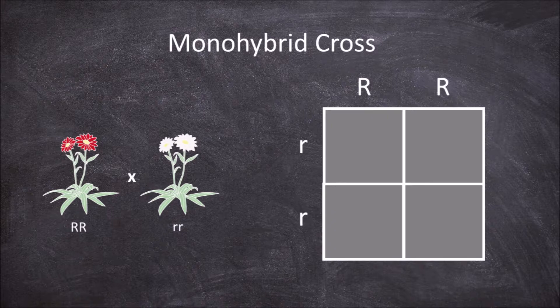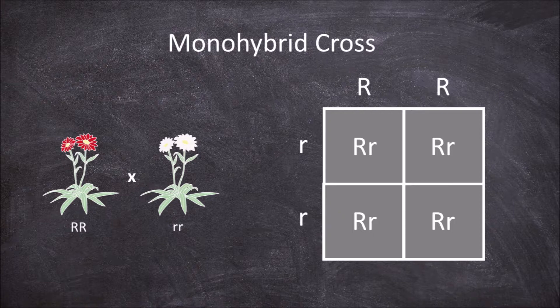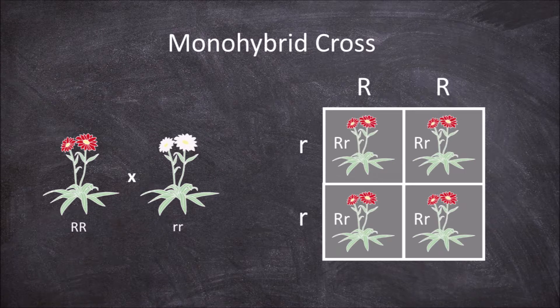Since offspring get one allele from each parent you combine the corresponding allele from the top and side of each square with the capital letter ALWAYS FIRST until all four squares have two alleles in them. This gives you your potential offspring from this cross. In this cross all the potential offspring have the same genotype of big R little r and all have the same phenotype of having red flowers.